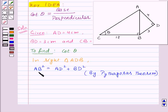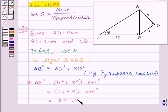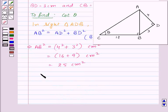Now let us substitute the values of AD and BD. So this implies AB square is equal to 4 square plus 3 square centimeter square, which is equal to 16 plus 9 centimeter square, that is 25 centimeter square. Thus AB will be equal to 5 centimeters.